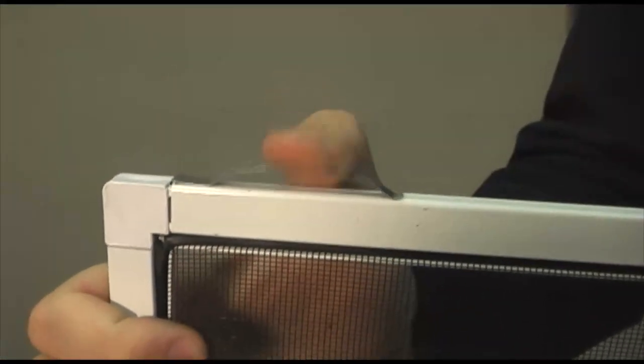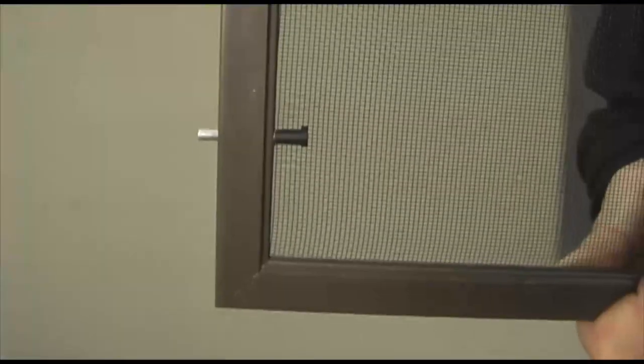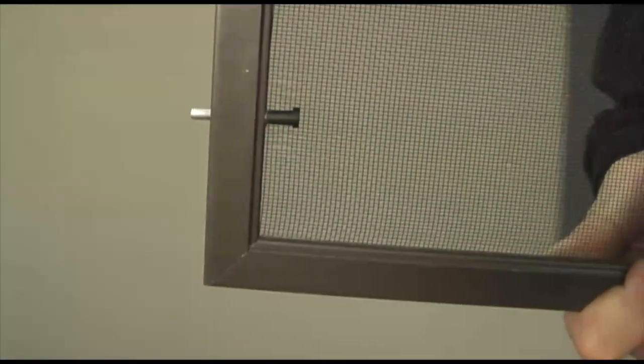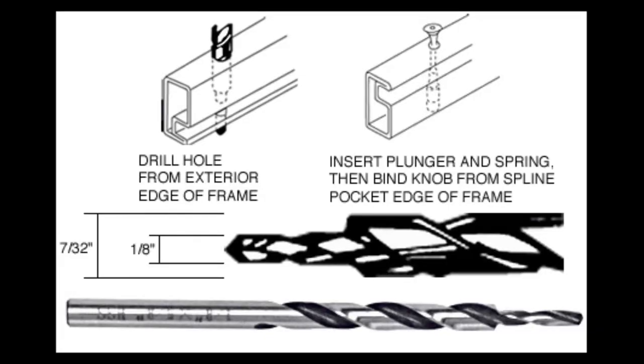After you have cut your frame, you can start thinking about which type of hardware you would like to use. Springs and plunger bolts both need to be installed before you install your screen mesh. To install plunger bolts, you're going to need a two-step high-speed drill bit, which has two drill bit sizes on the same head, which can be purchased on our website.